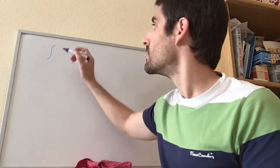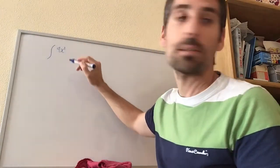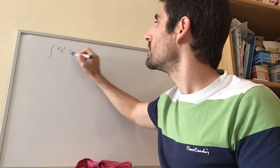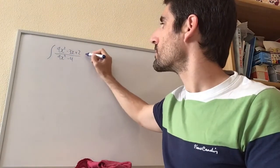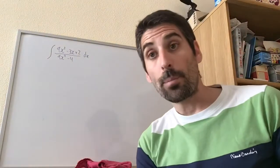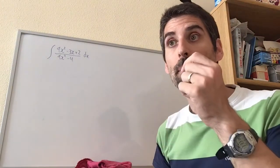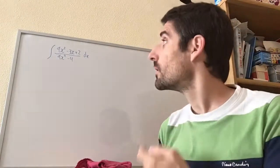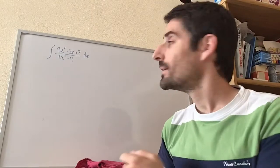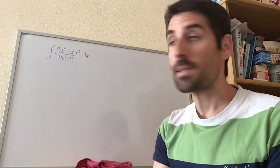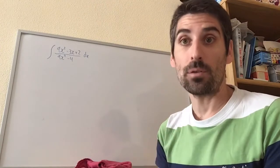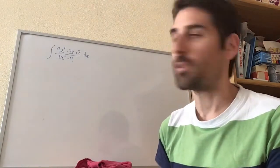Another case is when we have an improper algebraic fraction. For example, (9x squared minus 3x plus 2) divided by (9x squared minus 4) dx. Remember, an improper algebraic fraction is one where the order of the numerator is equal to or bigger than the order of the denominator. If that's what we're dealing with, you have to divide the polynomial first — you must remember how to divide polynomials.